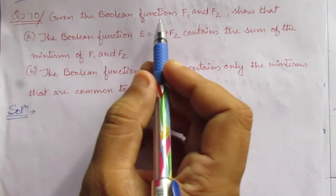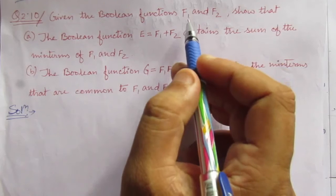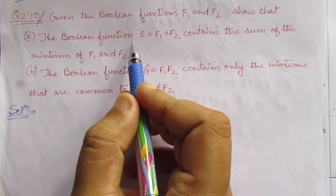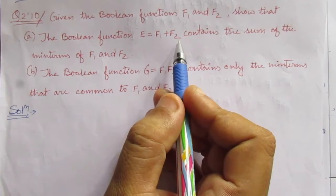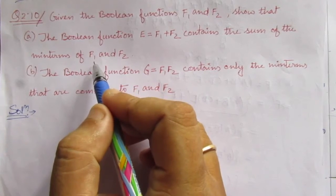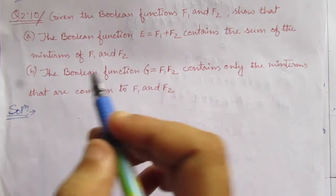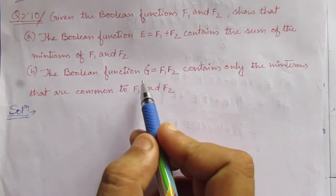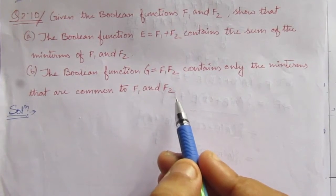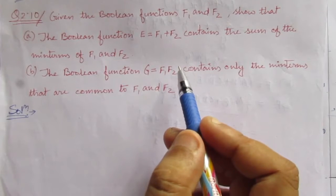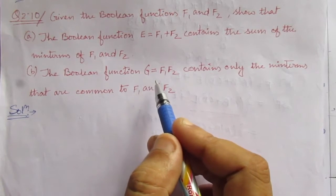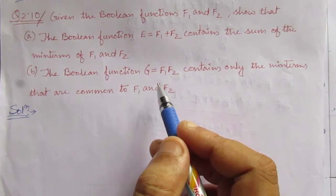The problem is: given two boolean functions f1 and f2, we have to prove that the boolean function e equal to f1 plus f2 contains the sum of the minterms of f1 and f2. Then we have to show that the boolean function z equal to f1 into f2 contains only the minterms that are common to f1 and f2. If there is no common minterm, then the answer will be 0.